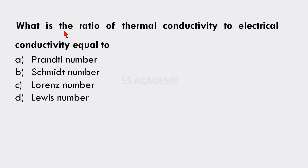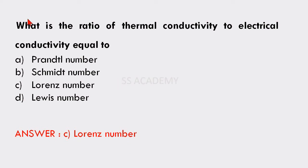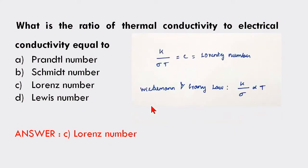Next question: What is the ratio of thermal conductivity to electrical conductivity equal to — Prandtl number, Schmidt number, Lorentz number, or Lewis number? The answer is the Lorentz number. The Lorentz number equals K divided by σT, where K is thermal conductivity, σ is electrical conductivity, and T is absolute temperature.